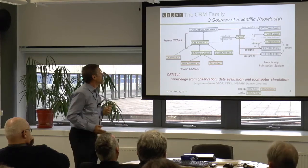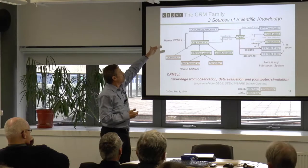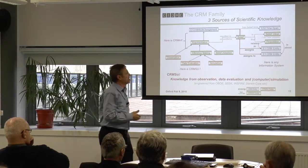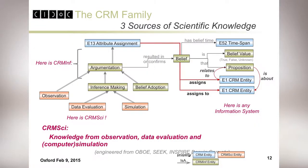The CIDOC CRM describes these processes summarily as attribute assignment. There was an attribute assignment that happened at some time, assigned to something a value, and this assignment is about a type which is registered at the attribute assignment. This is a way to circumscribe, to reify a proposition — a triple in its own right.